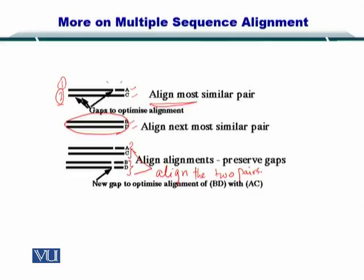This is a very important point to remember. In the first step, you aligned sequences that are similar to each other, thereby creating pairs of sequences. Now you are aligning the pairs themselves.